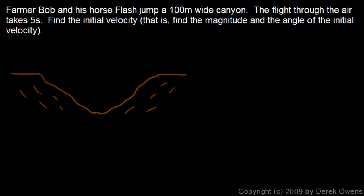In this problem, we're told that Farmer Bob and his horse Flash jump a 100 meter wide canyon, and the flight through the air takes 5 seconds. We have to find the initial velocity, specifically the magnitude and the direction or angle. So we need to know how fast he's moving and in what direction he had to jump in order to make this leap across this canyon that's 100 meters wide.